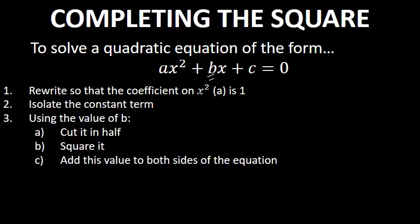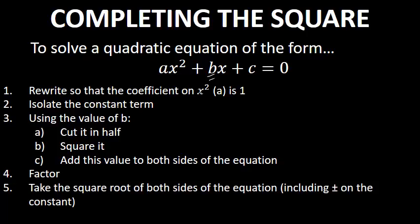It's not as complicated as it sounds — when we do an example you'll see it is actually quite easy. After that step, you'll factor the left side of the equation, then take the square root of both sides, including a plus or minus in front of the constant on the right side. At that point you can finally solve for x.